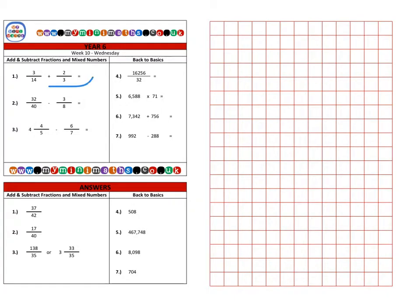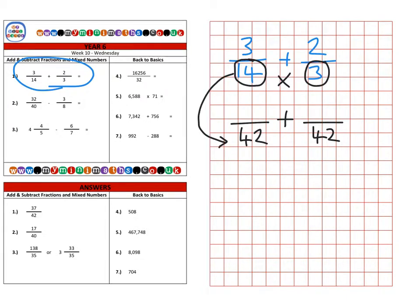First of all, question one, which is three fourteenths. We're going to add two thirds to that. So the first thing we need to do is find a common denominator. An easy way to do that is to multiply these together to give us 42, which becomes our new common denominator. So 14 was multiplied by 3, so I need to do the same with the numerator at the top, so my new numerator is going to be 9. Here the 3 was multiplied by 14, which we do the same with the numerator to give us a numerator of 28.